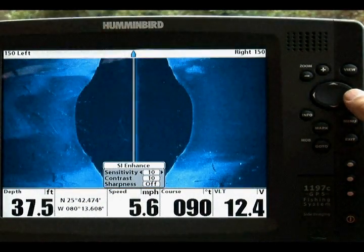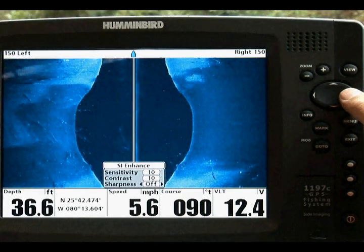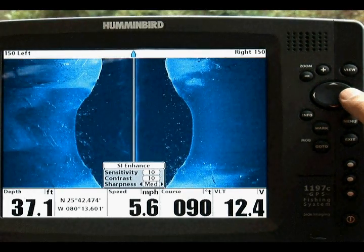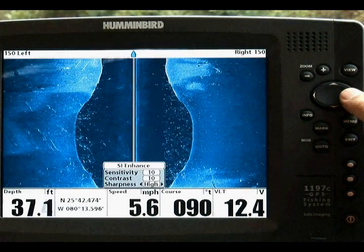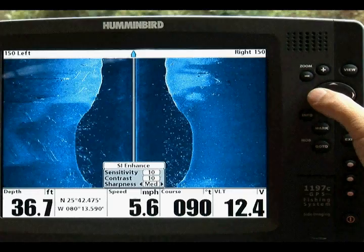One tip to increase the visibility of fish on the screen is to set the sharpness located under the SI enhancement setting to high. This feature distinguishes fish from the surrounding black background. Each angler should determine which setting works best for them.